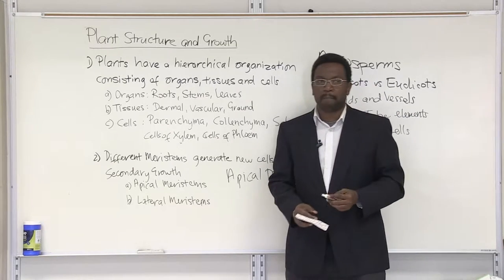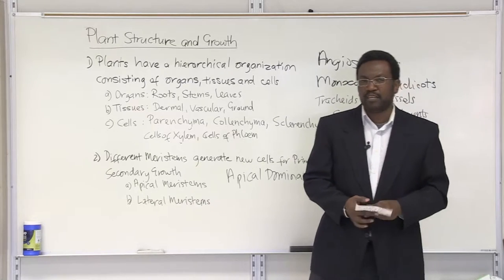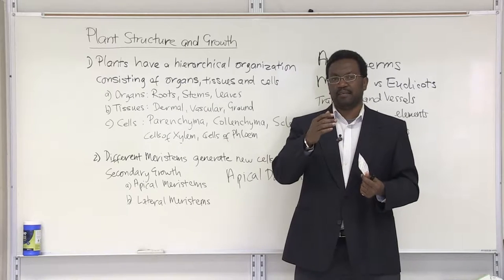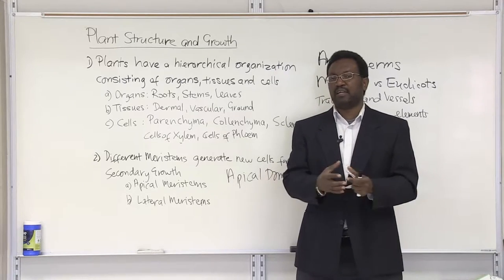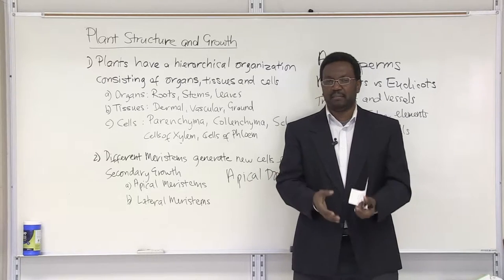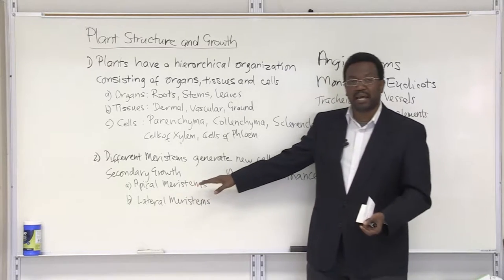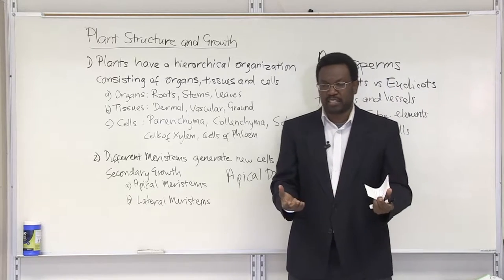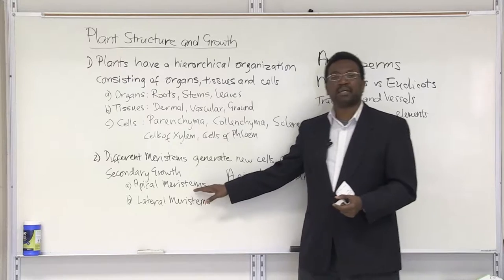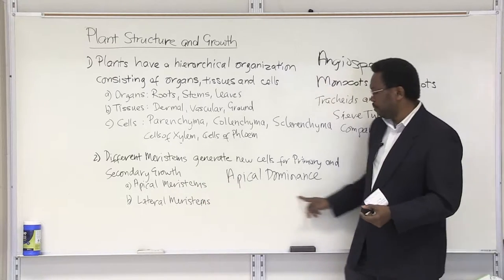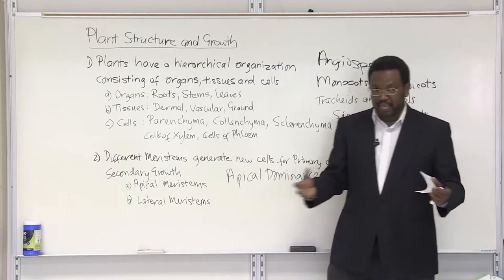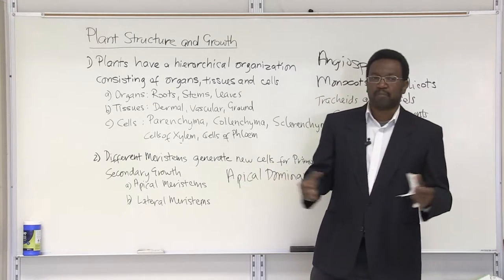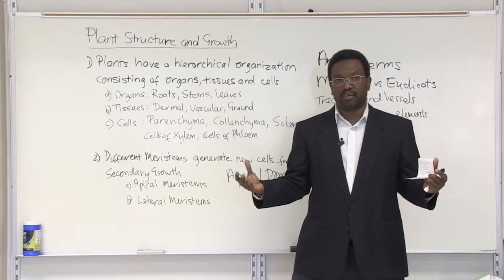What is apical dominance? Once the apical meristems are active, the plants are always going to grow taller and the axillary buds, which are responsible for lateral branching, are going to be inhibited. Once the apical meristems are active, the axillary buds are suppressed. If you were to remove the apical meristem, you've removed the apical dominance and the plant's axillary buds can sprout and generate lateral branching, and the plant starts growing wider than it does taller.